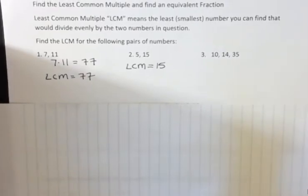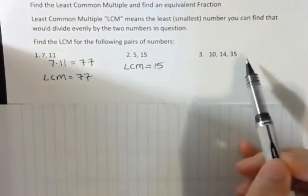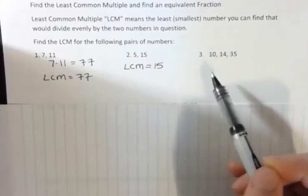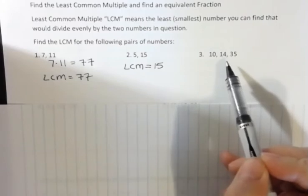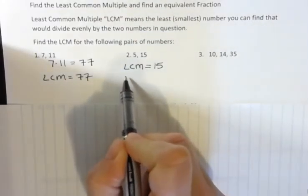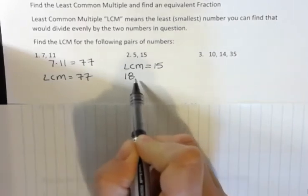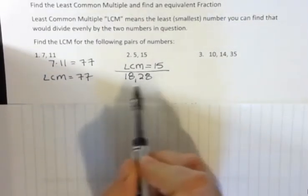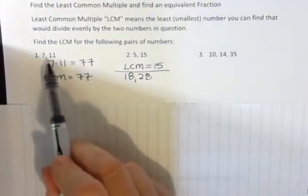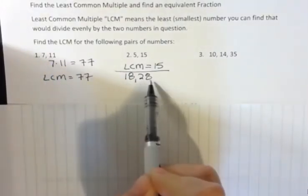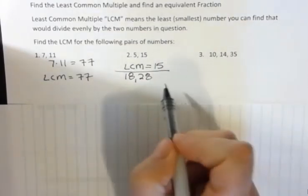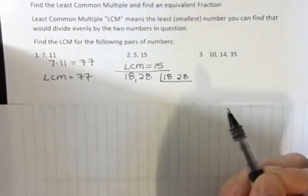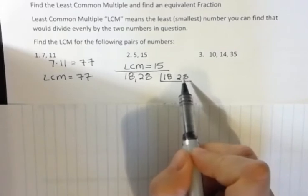But what about the ones that aren't quite as obvious? So I did a three number one here. Maybe I should have done another two number one to get you warmed up, but I'm going to go back and do this. What if I wanted to find the least common denominator for eighteen and twenty-eight? Well, eighteen and twenty-eight don't have one that goes into the other, but they're not totally different like these because they have a common factor of two. So here's how I would do that. I would take the eighteen and the twenty-eight, and I would write an upside-down division symbol.